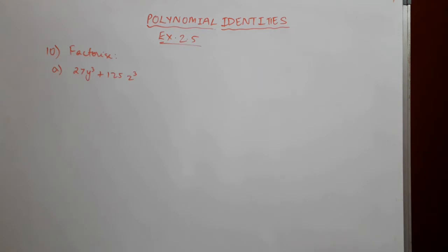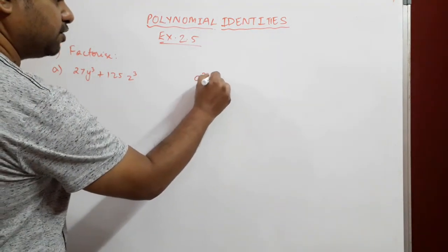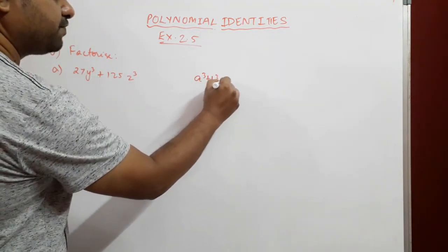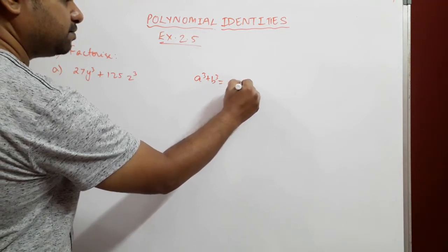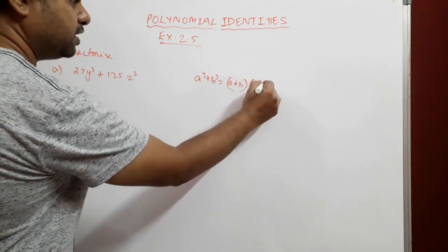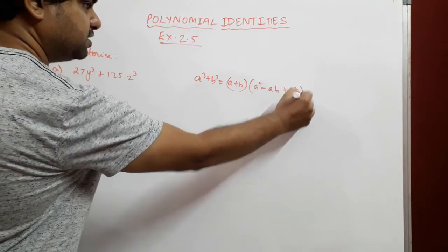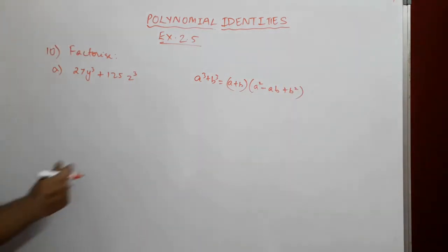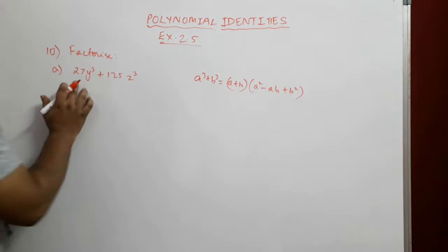This is of the a³ + b³ form. We'll write down the identity first. a³ + b³ = (a + b)(a² - ab + b²). From here we need to get the expression into this form, but first we need to find the cubes.